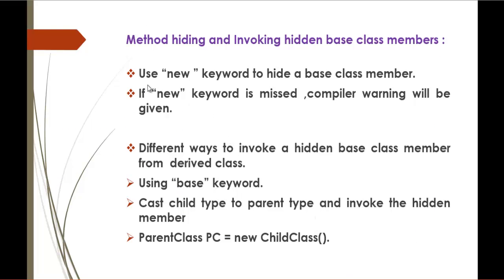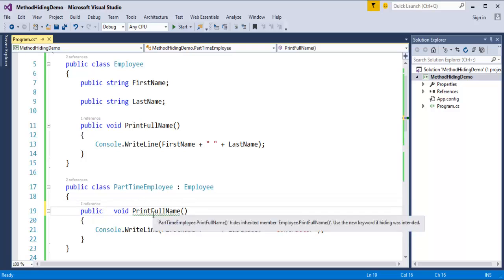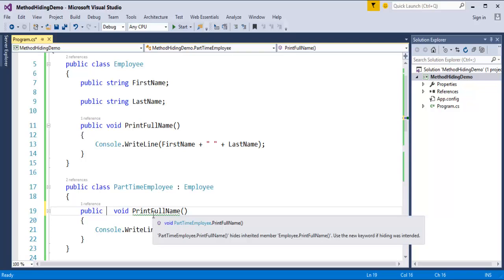We'll jump back into the presentation. Method hiding and invoking hidden base class members — we just saw the usage of the new keyword. Use the new keyword to hide a base class member — that's what we did in Visual Studio. And if the new keyword is missed, a compiler warning will be given. When we remove the new keyword, the compiler warns us that if you are intentionally hiding that method, just use the new keyword.